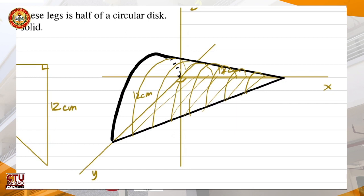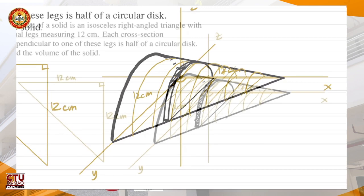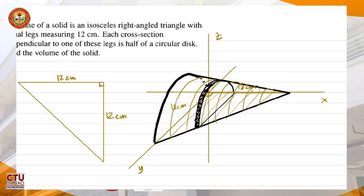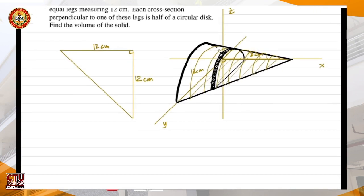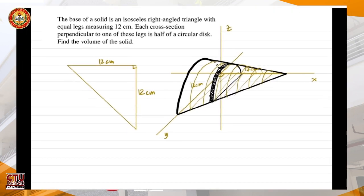Let us consider one of the slices. This slice has a thickness. These are the positive sides of the axes. For the x-axis, this is positive x; y-axis, positive y; and z-axis, positive z.